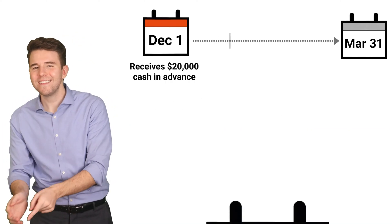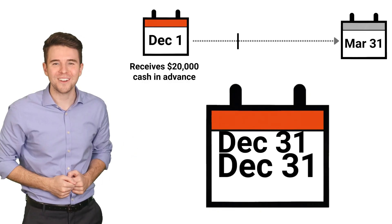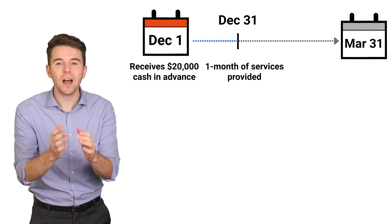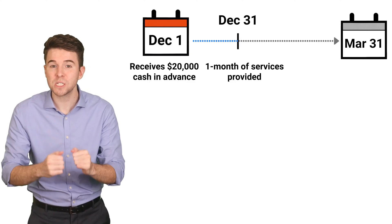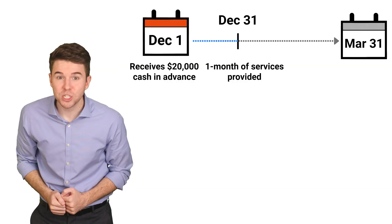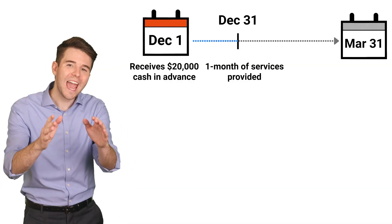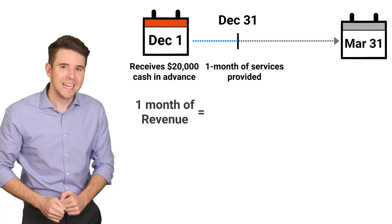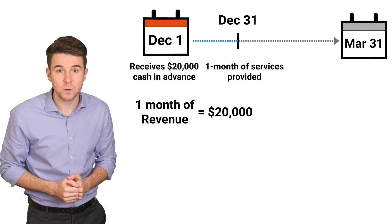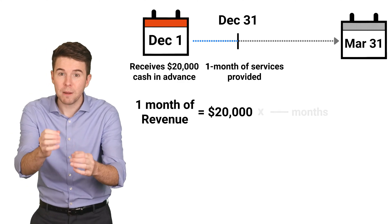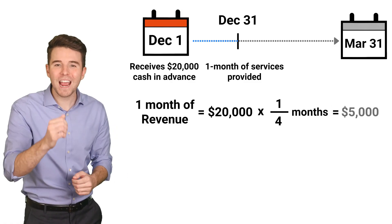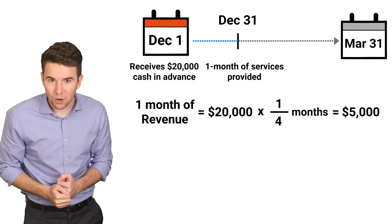Next, let's fast forward to the end of the accounting period on December 31st. The company has now provided one of the four months of services promised. Therefore, we record an adjusting entry to recognize the revenue we have now earned. To compute revenue earned, we take the $20,000 advance payment and multiply it by one month over four months, which gives us $5,000 of revenue earned.